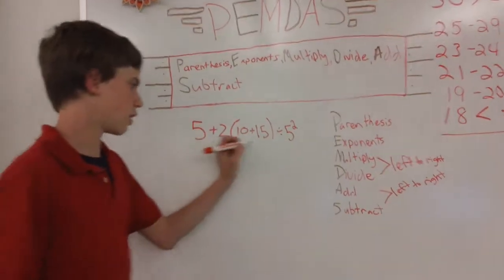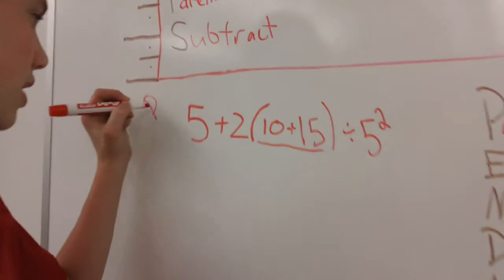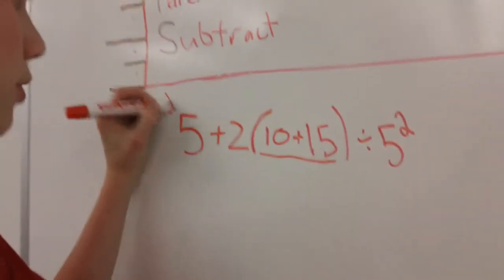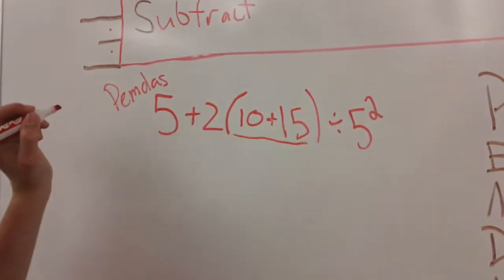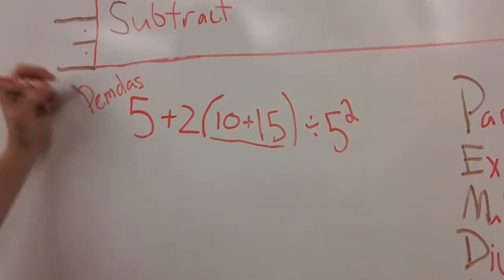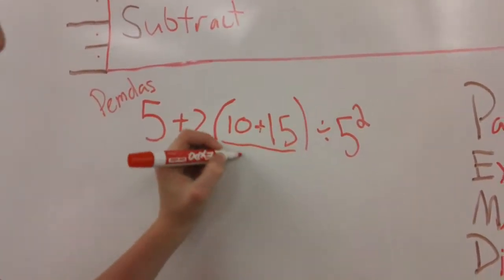Say you have this problem. You would do whatever is in the parentheses first because in PEMDAS it's parentheses, exponents, multiply, divide, add, and subtract. Taking the parentheses, you would get 25.